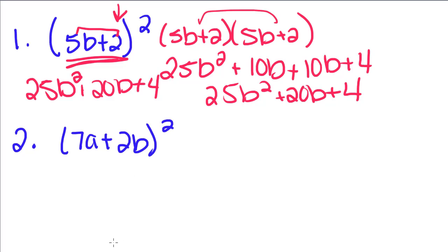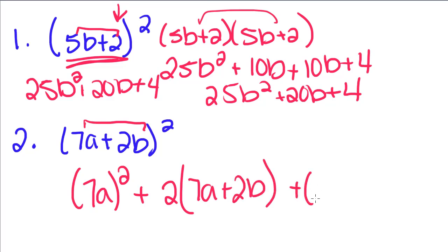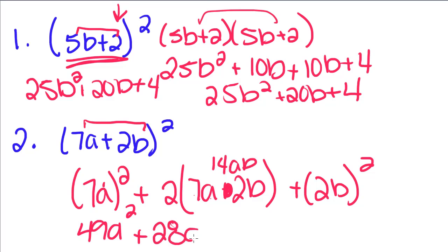So this time we're going to do this one using the shortcut. So we're going to square the first term, 2 times these two terms multiplied, 7a plus 2b, and square the last term. Now I put these two in parentheses so that we remember that we can't just square the a, we have to square the 7 as well. So this becomes 49a squared plus 7a times 2b is 14ab times 2 is 28ab plus 2 squared is 4b squared.